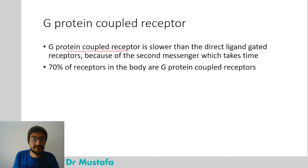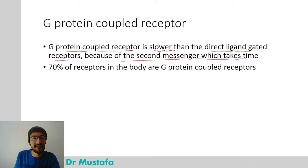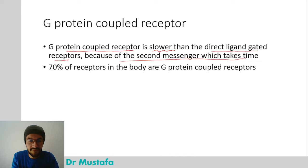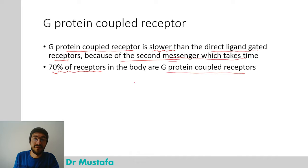G protein-coupled receptors are slower than direct ligand-gated receptors because of the second messenger, which takes time. The direct ligand-gated receptor has no second messenger and activates very fast, while G protein-coupled receptors have a second messenger and take longer. Notably, 70% of receptors in the body are G protein-coupled receptors — they are the most common receptor type in the human body.